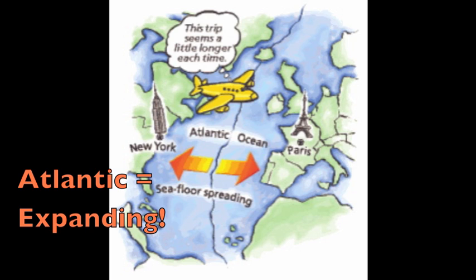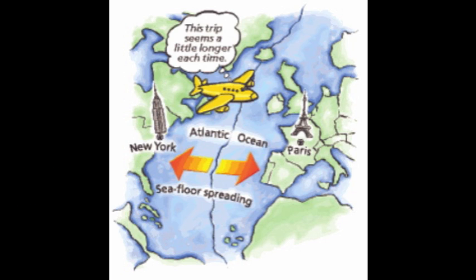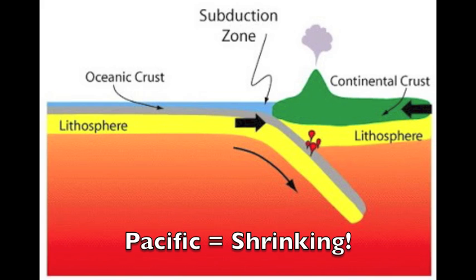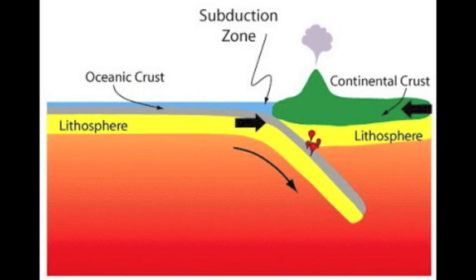Since the Atlantic is growing and gaining area, another ocean must be losing area. Therefore, the Pacific will keep shrinking due to subduction zones — when dense oceanic crust sinks below another crust, destroying seafloor.